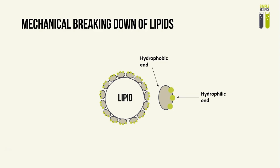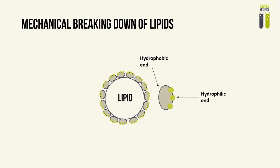Before we talk about the chemical digestion of lipids, let's talk about the mechanical breaking down of lipids. Lipids and water are immiscible, which means that they cannot mix. So you would often need something called bile salts, which are produced in the liver and stored in the gallbladder, then released into the small intestine, where they bind to lipid molecules. The bile salt molecule has a hydrophilic end — attracted to water — and a hydrophobic end, which repels water and doesn't mix with it. So the hydrophobic end sticks to the lipid molecule, the hydrophilic end faces away, and as it is attracted to water, it pulls small bits of the lipid away from the big lipid molecule, so you end up with many small lipid molecules scattered around. This increases the surface area of lipids for chemical digestion.